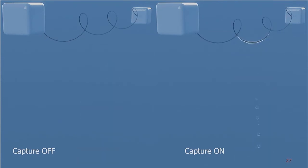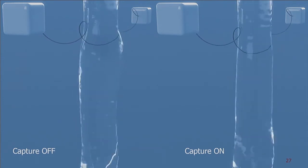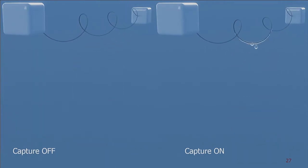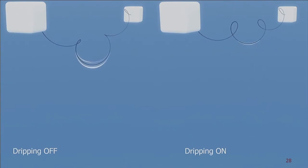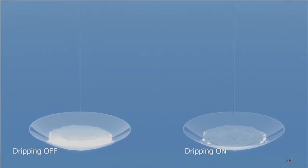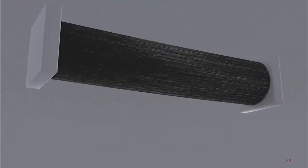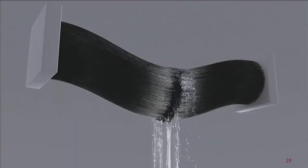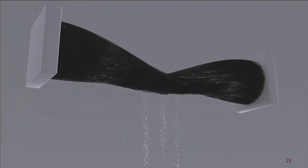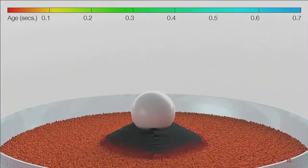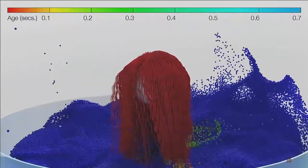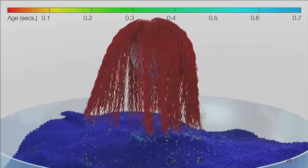Here we compare capturing off versus on — notice how on the right the hair accumulates water and ends up drooping and heavier than the one on the left. We also compare dripping off versus on — the dripping on the right looks more realistic. Here we have more hairs capturing liquid, which finally drips out as the hair is squished, since the effective radius is much smaller when hairs are squished together. We also visualize the age of particles to show when capturing and dripping happen — red particles are newly created, while blue ones indicate they have existed for a while.